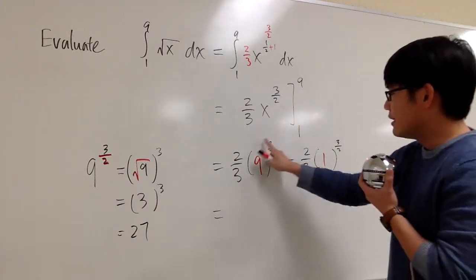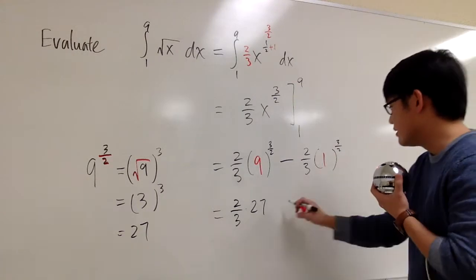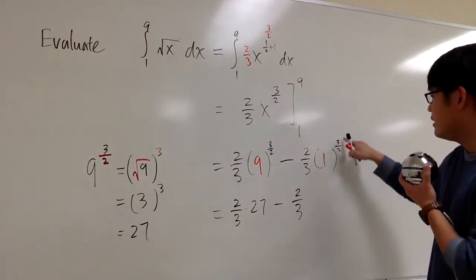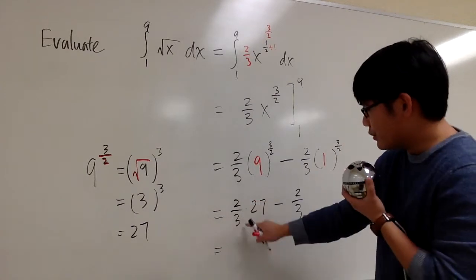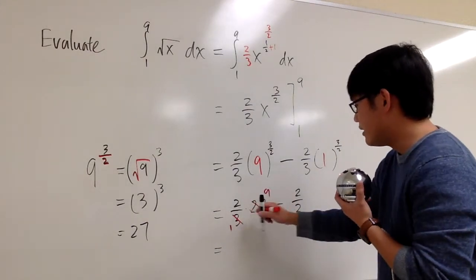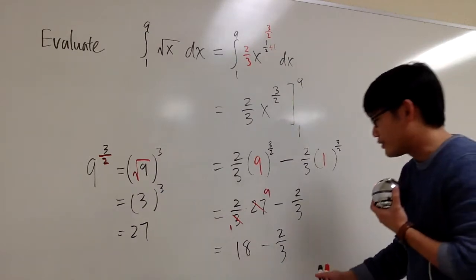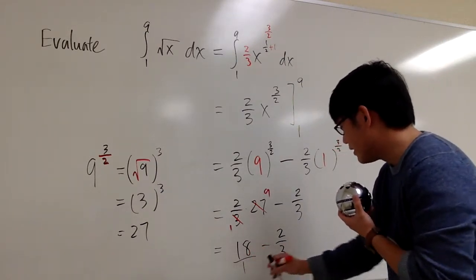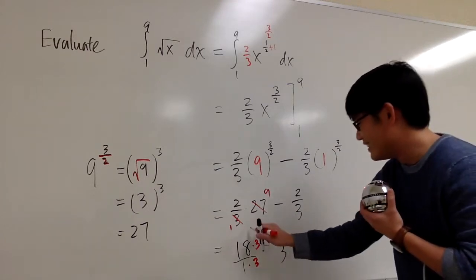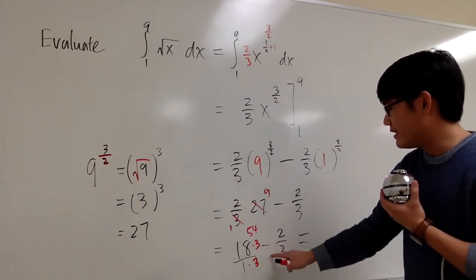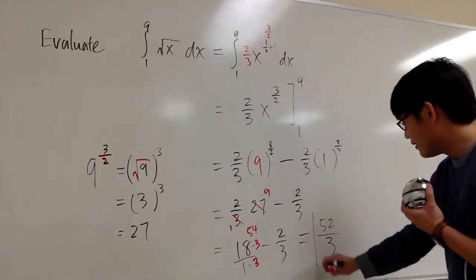So this power here is 27. This gives us 2/3 times 27, minus 2/3 times 1 — since 1 to any power is just 1. For 2/3 times 27, we can cancel: the 3 and 27 simplify to give 2 times 9, which is 18. So we have 18 minus 2/3. Converting 18 to thirds: 18 times 3 over 3 is 54/3. Then 54 minus 2 is 52, over the same denominator 3. So the answer is 52/3.